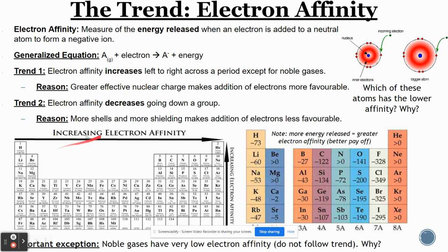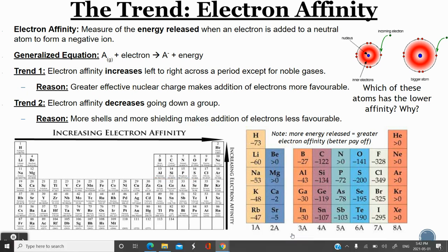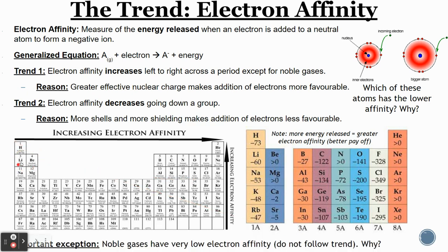You can see the trend over here for electron affinity. Generally, the electron affinity increases as you go from left to right. So for example, fluorine has a higher electron affinity than lithium. There is an important exception to understand though — we don't really count the noble gases in this trend. They actually have very low electron affinities.